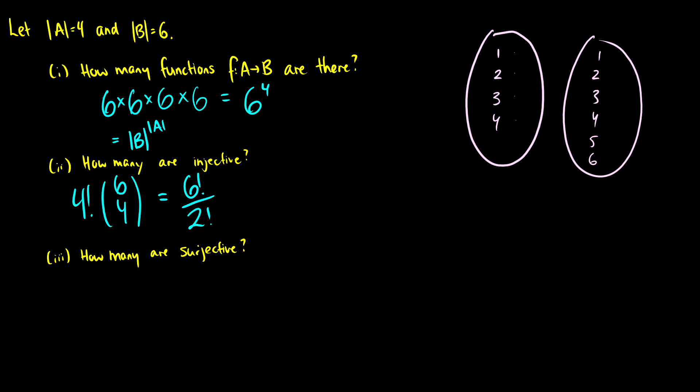Okay so how many of these are surjective? What does surjective mean? That means that the codomain is equal to the range. Well we can't do that because we can only map to four things, therefore our codomain is never going to equal the range so we have a total of zero.